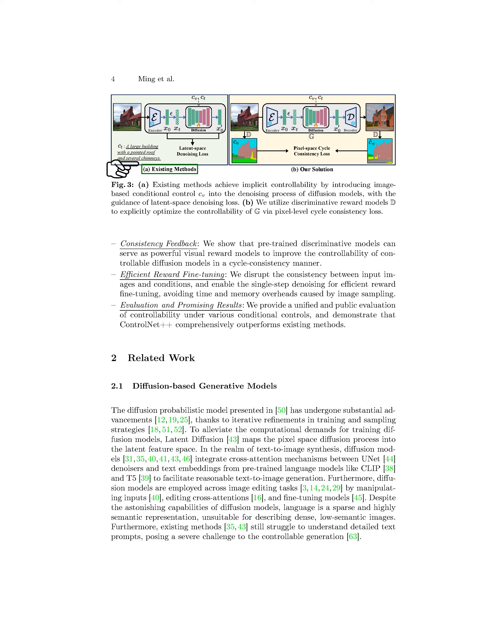We first provide background information on models and then discuss designing cycle consistency laws to enhance controllability in controllable models. We also address efficiency issues and propose an efficient reward strategy that uses single-step denoised images for consistency loss instead of sampling images from random noise. The models create a forward process chain by gradually adding noise to input data, and the training loss is calculated based on this process.